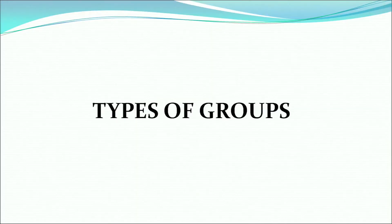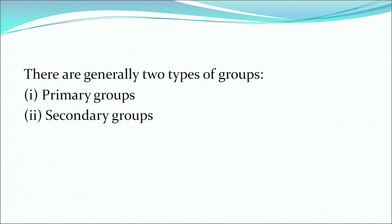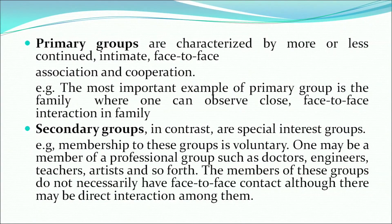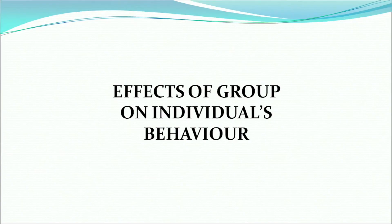There are mostly two types of groups: primary groups and secondary groups. Primary groups are generally characterized by continued, intimate, face-to-face association and cooperation — the most common example is the family. Secondary groups, in contrast, are special interest groups where membership is voluntary. One may be a member of a professional group like doctors, engineers, teachers, or artists. Members of secondary groups do not necessarily have face-to-face interaction, although there may be direct interactions among them.